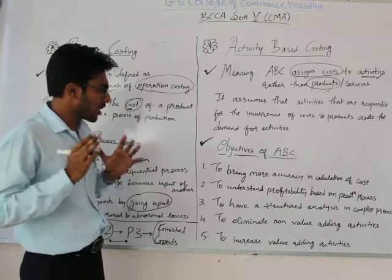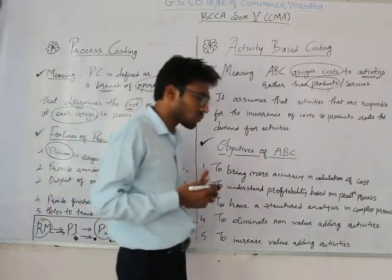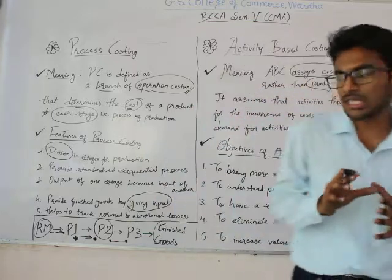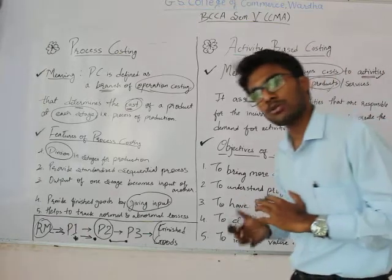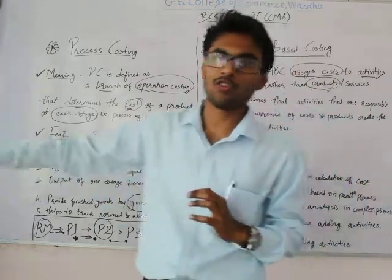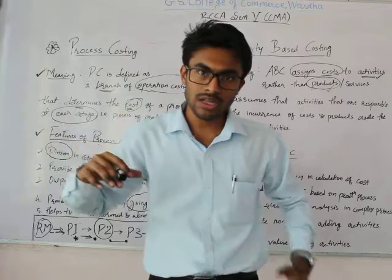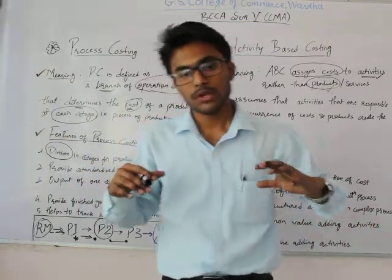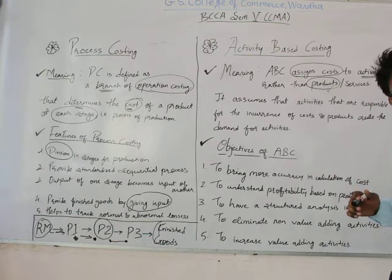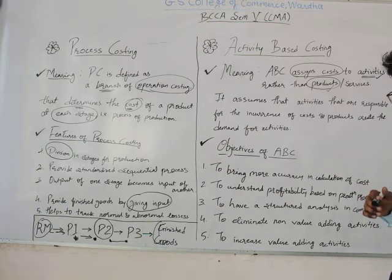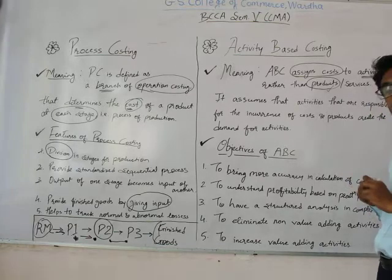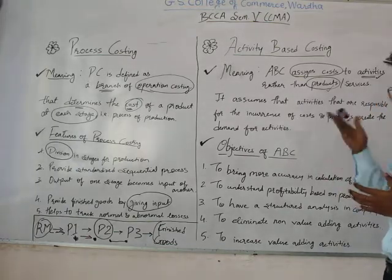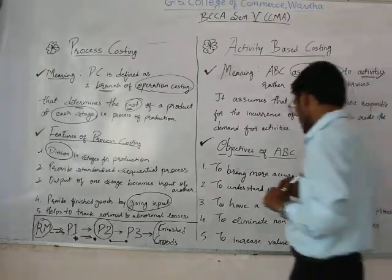The objectives of ABC are: first, to bring more accuracy in calculating cost. They will calculate cost by focusing on activities, which makes it more accurate and comparable.